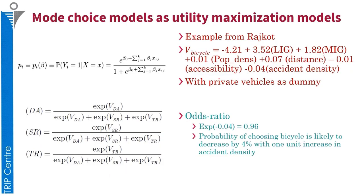Once we have collected data from individuals using revealed preference and stated preference surveys, we can estimate a mode choice model, which is basically a utility maximization model using logistic regression methods. The form of the model is as shown here, where the numerator can be considered as the exponential of the utility of using that particular mode.